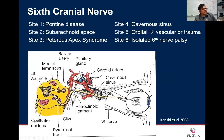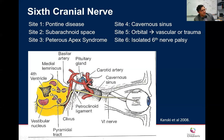The sixth nerve nucleus is in the pons. The fascicle exits ventrally and travels superiorly through the subarachnoid space — a vertical shift rather than a parallel one seen with the third and fourth. It passes by the petroclival ligament, enters the cavernous sinus, and goes into the orbit to the lateral rectus. Because of this upward route, elevated intracranial pressure — which causes vertical movements — can cause unilateral or bilateral sixth nerve palsy as a false localizing sign.